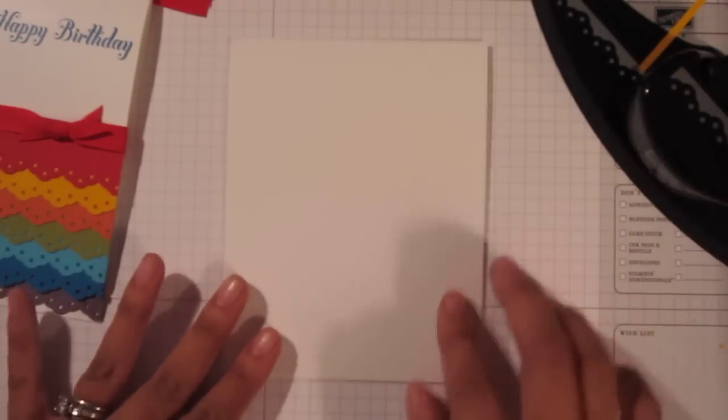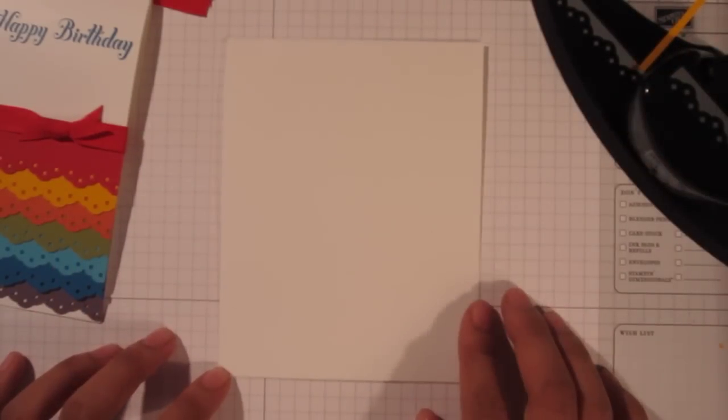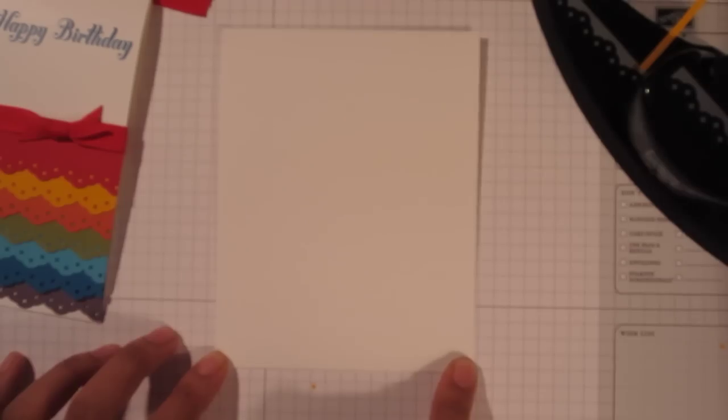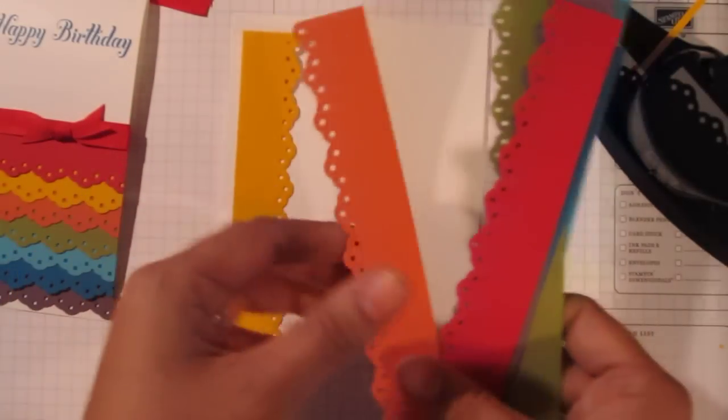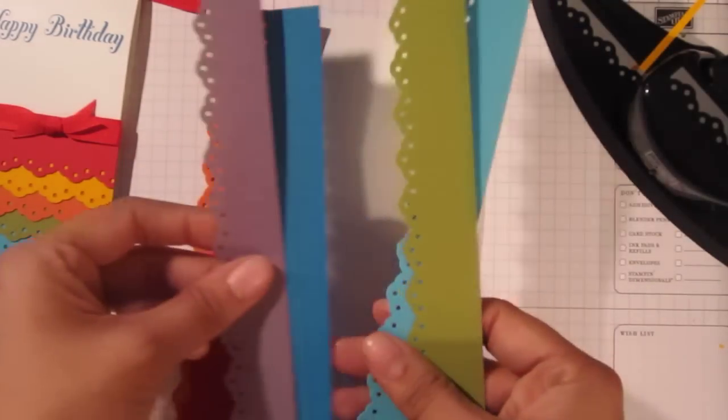So I have a standard size A2 card in Whisper White. That's my dog. He wants to come inside. This is 5½ by 4¼. And I have all of my punched borders. So let's go ahead and start laying these down.